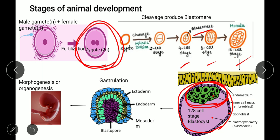The next stage is gastrulation — the rearrangement of cells in the blastula to create embryonic tissue layers. Gastrulation produces three tissue layers: ectoderm, mesoderm, and endoderm. The ectoderm forms epidermal and nervous tissues; the endoderm forms the stomach lining, GI tract, and lungs; the mesoderm forms muscle, bone, blood, and urogenital structures.